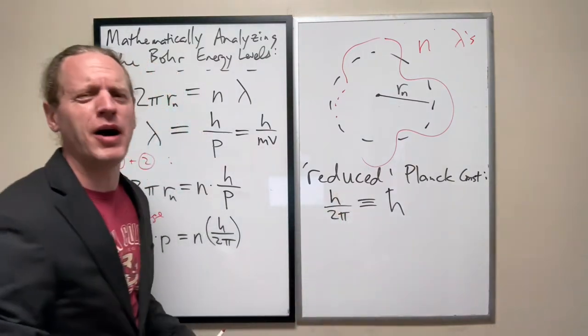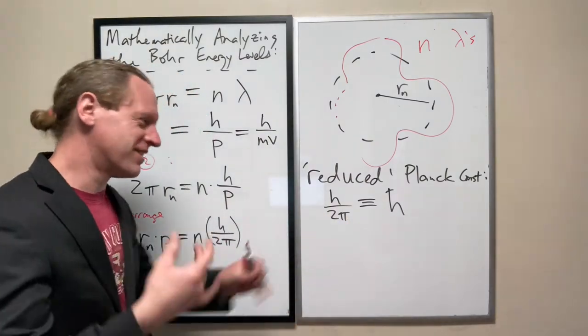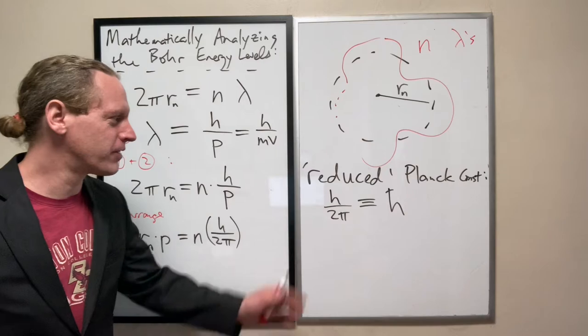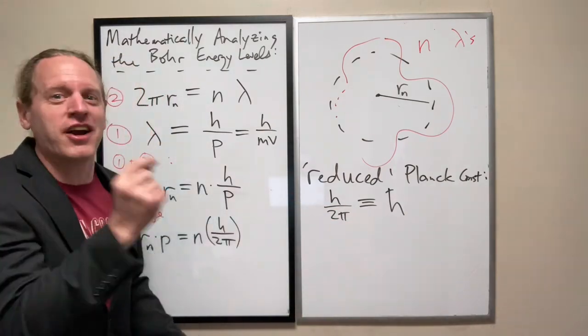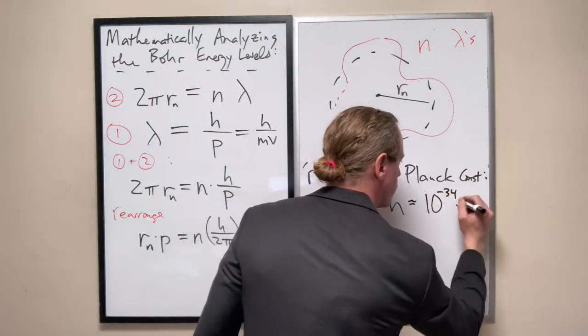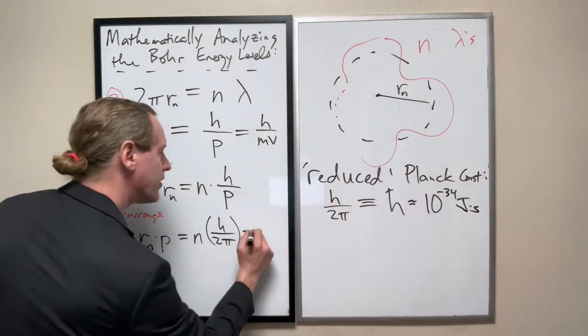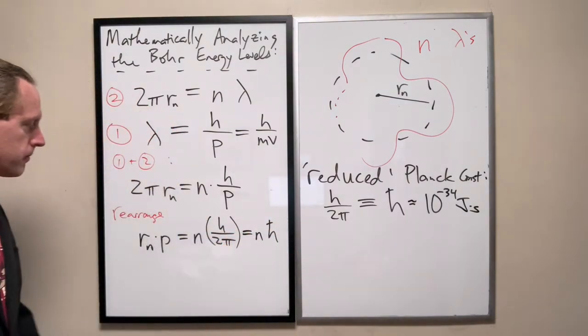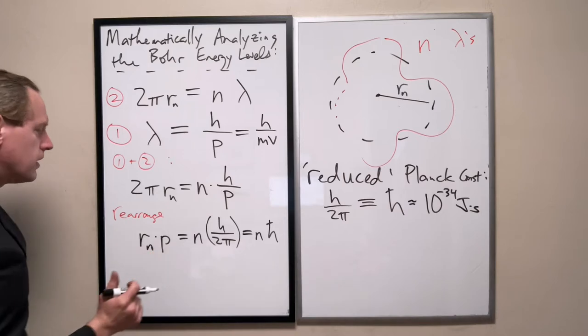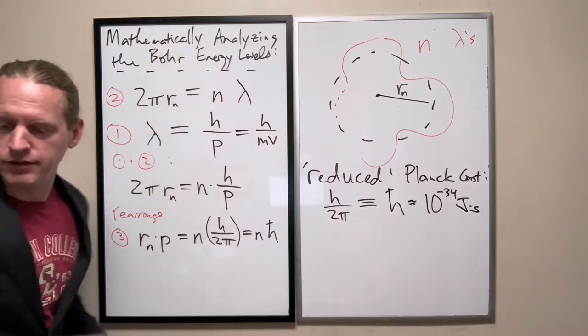So, if h is about 6 times 10^-34, and if 2π is about 6, this is actually even easier to remember. So, instead of h being about 10^-34, h bar is extremely close to, like, actually 1 times 10^-34. So, this is very close to 10^-34 joule seconds. Much closer than h itself. So, I'm just going to call this now h bar. And I'll say that's number three here.